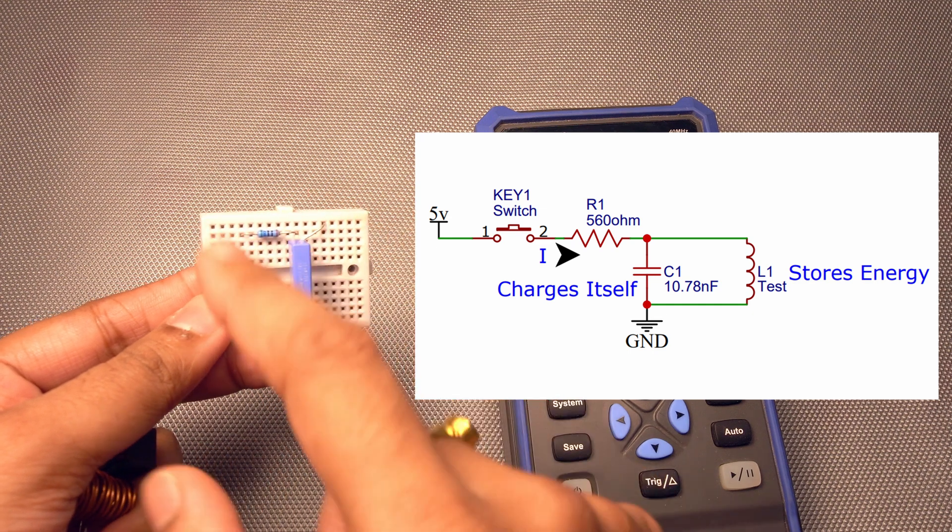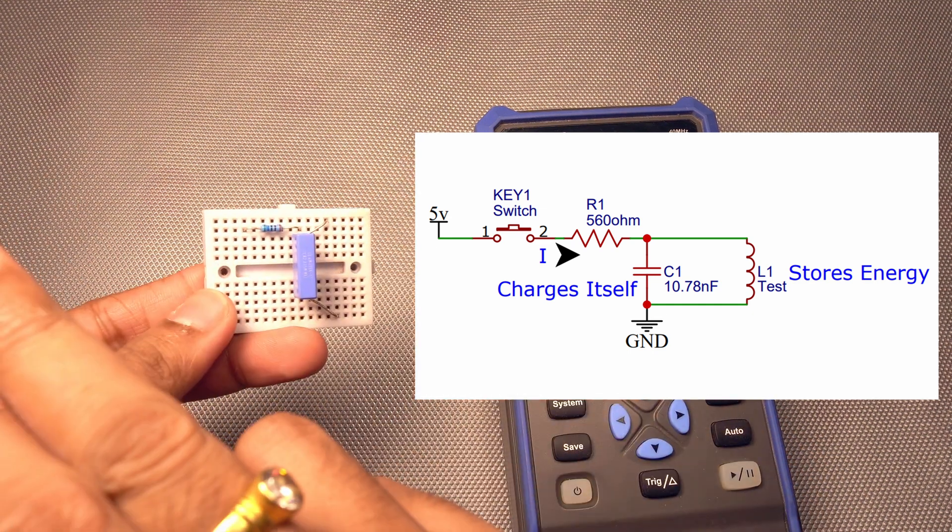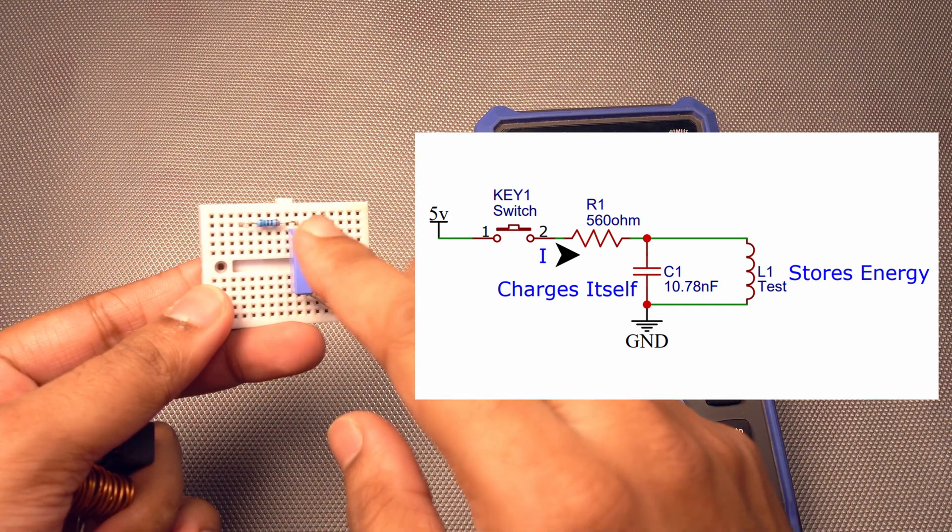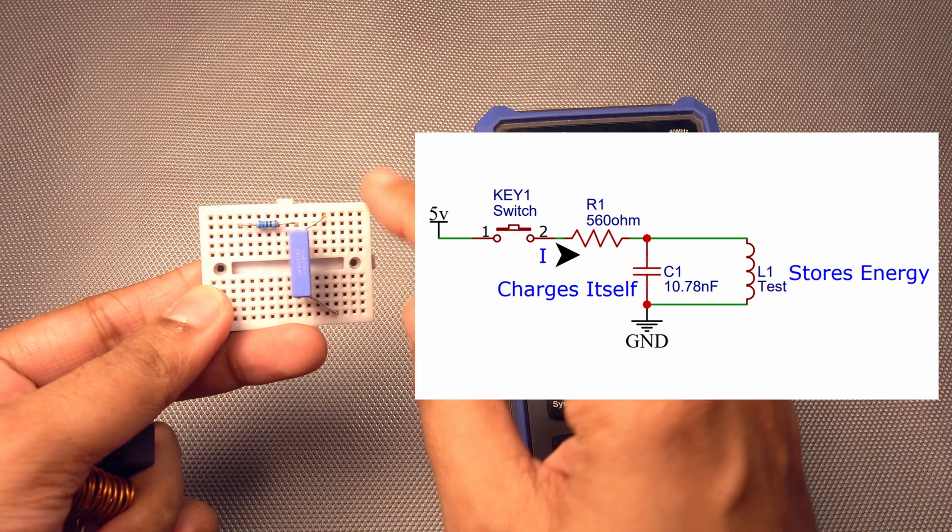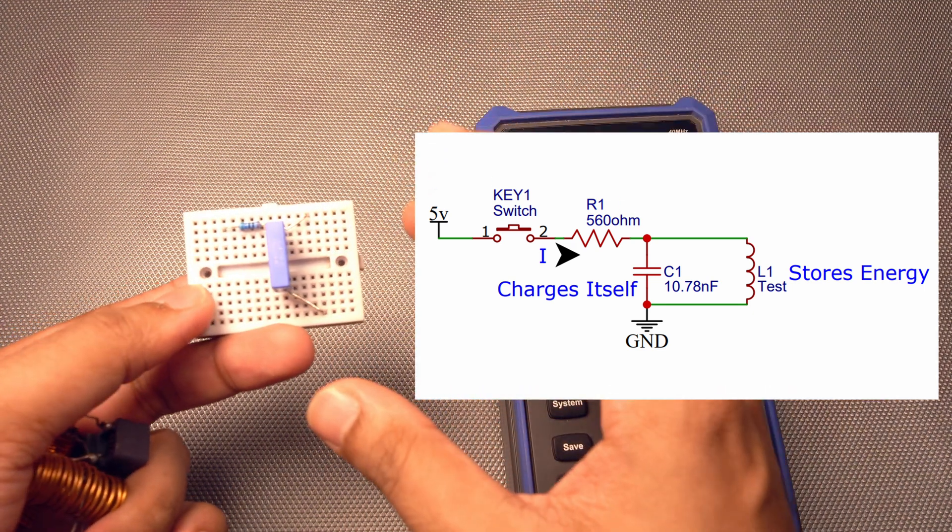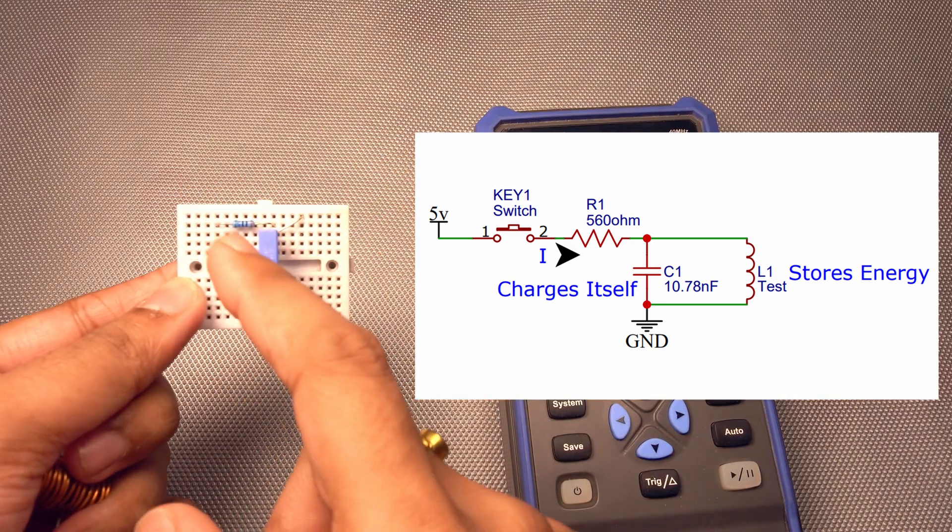And the working of the circuit is very simple. The current will flow through the resistor once we connect the voltage across it. The current will flow through the resistor and it will charge the capacitor and it will also build up the magnetic field in the inductor.